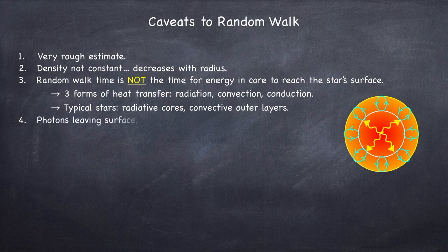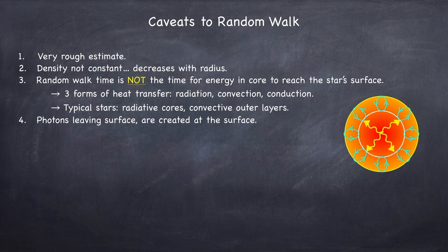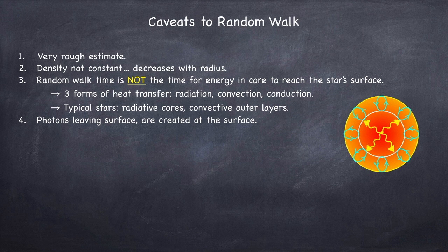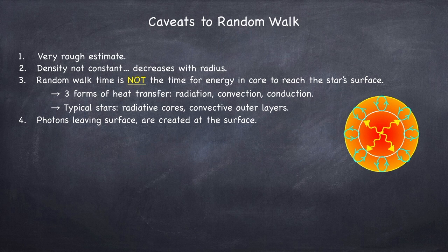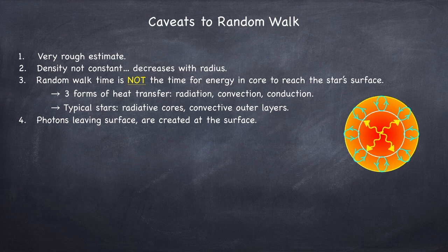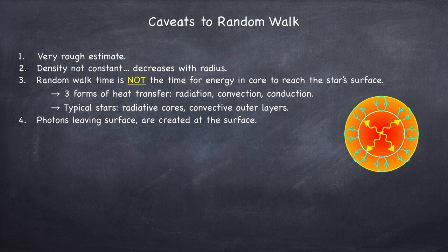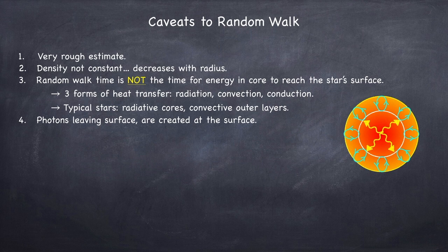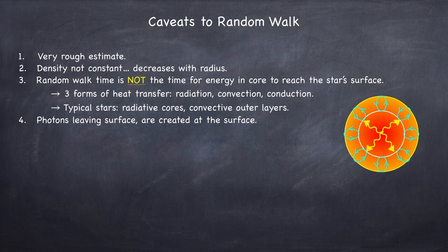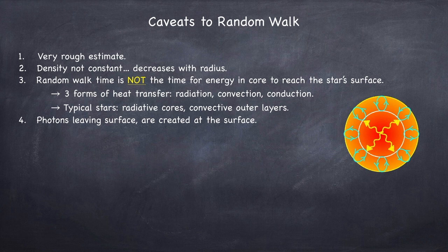Fourth, and this is also very important, photons leaving the star's surface are created at the star's surface. They're not created in the center of the star and then meander their way in this random walk until they can finally leave the star. It is a common misconception that when nuclear fusion first takes place in the star, it will take a random walk time for the star to turn on, meaning for it to start shining. But photon number is not a conserved quantity, and any material with a non-zero temperature will emit photons. So by the time the star has reached nuclear fusion, the star will already be hot, and so it will be emitting photons. The random walk time just gives you a rough idea of how long it takes for radiation transport.